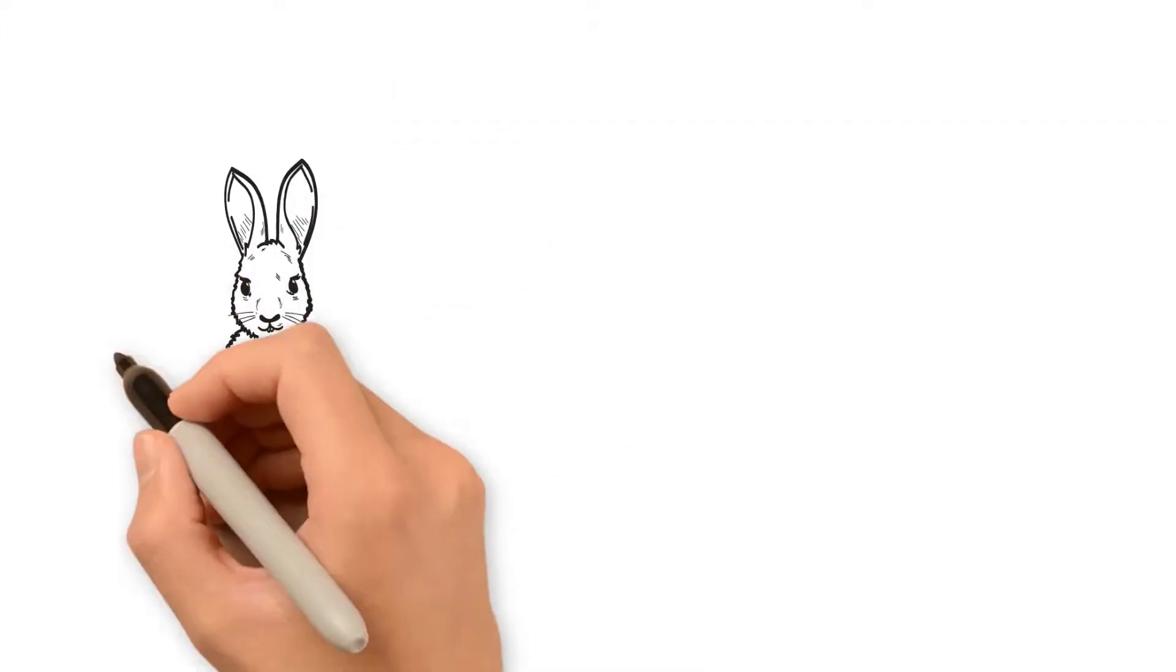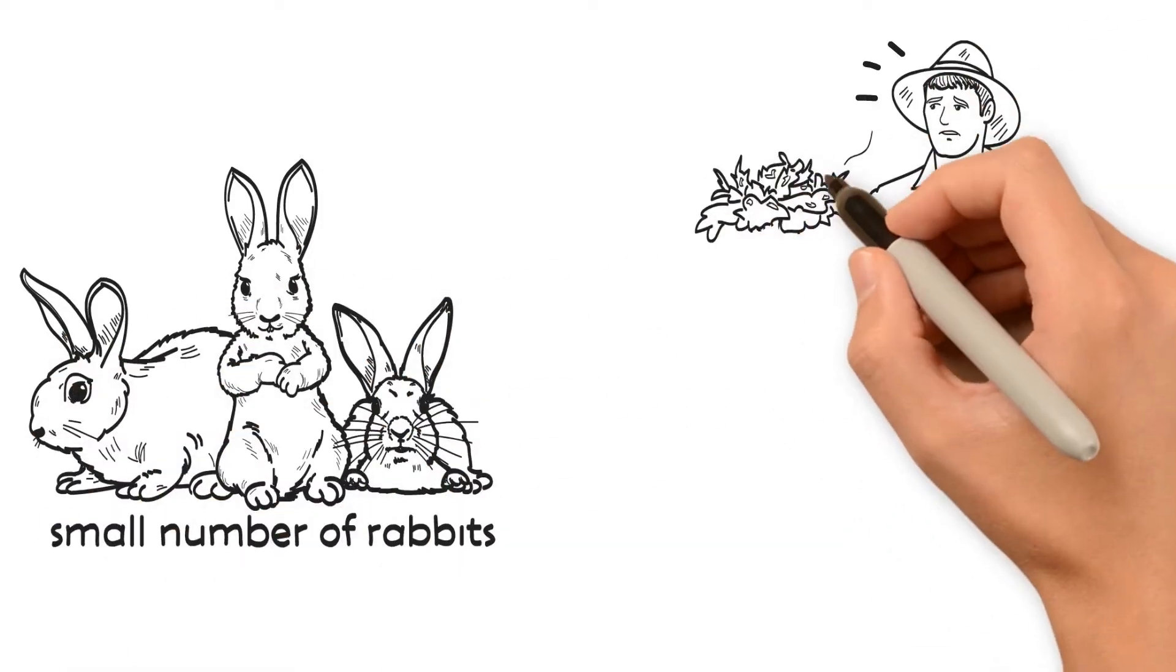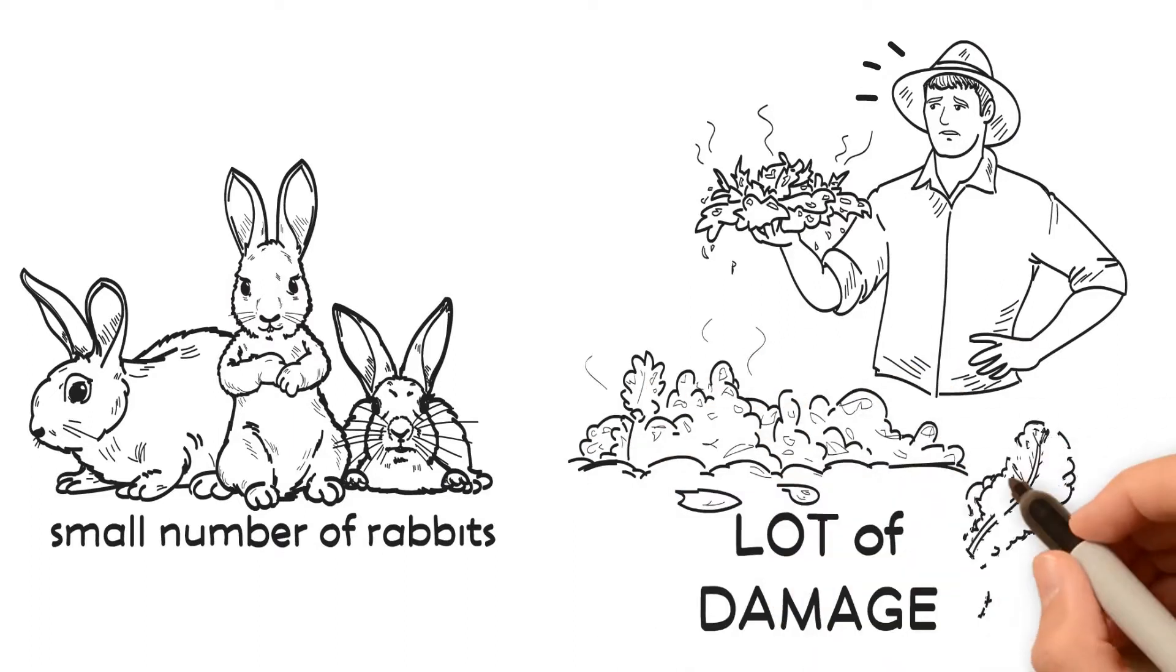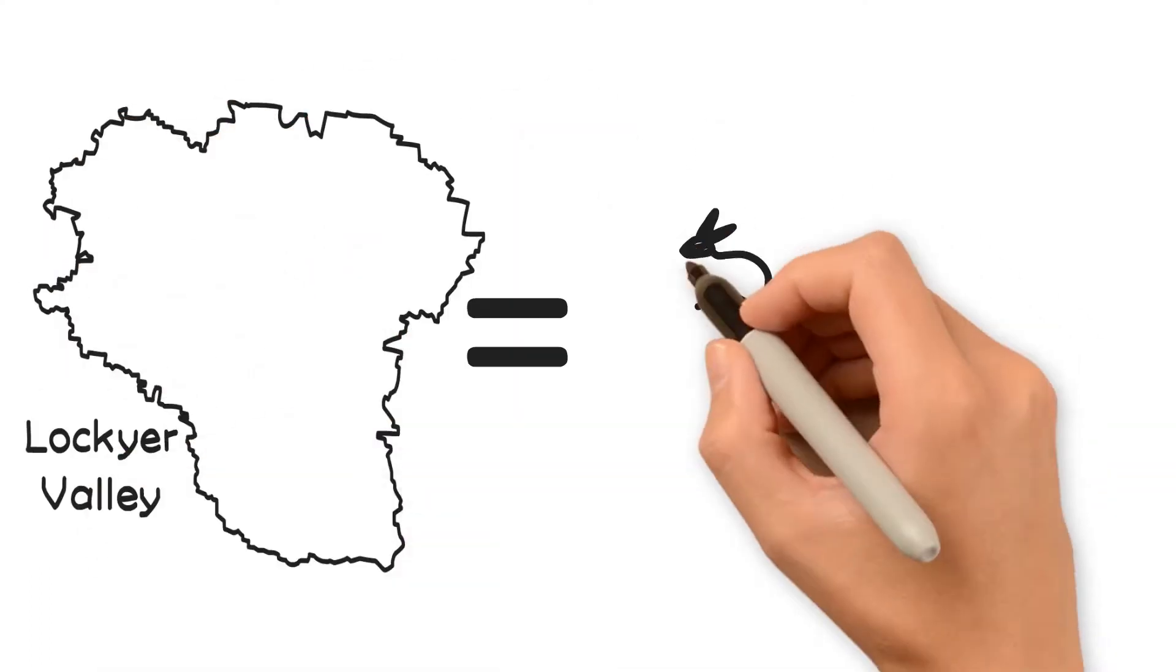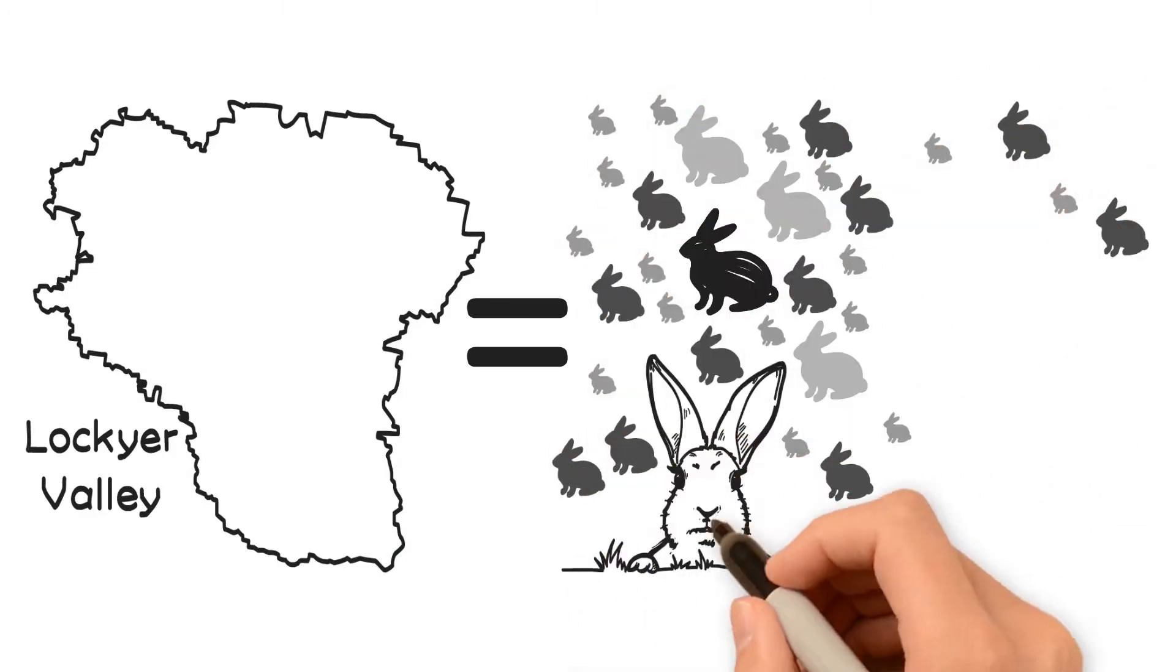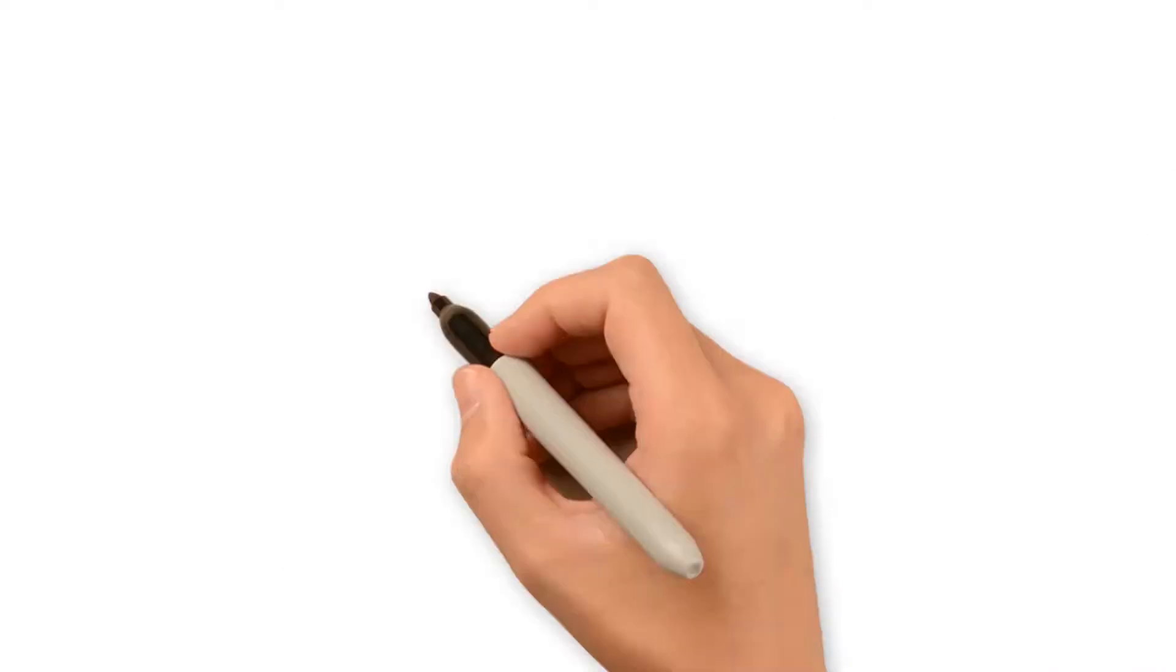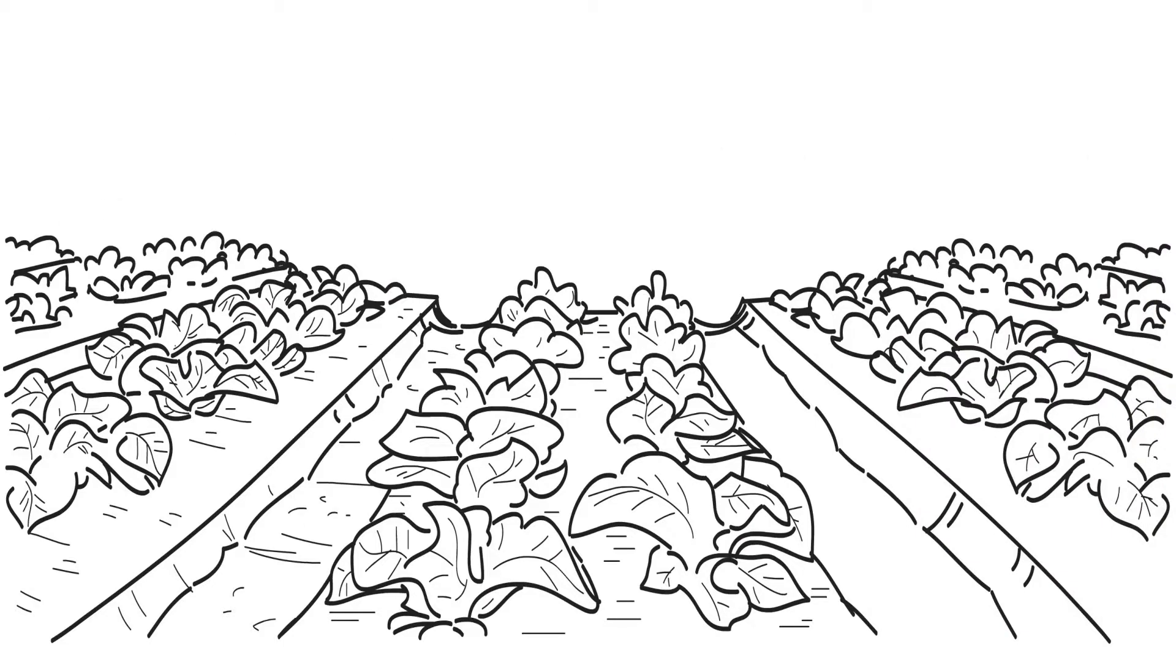As you can see, a relatively small number of rabbits can do a lot of damage to vegetable crops, grazing land, recreational areas and farming infrastructure. One infestation discovered in the Lockyer Valley was capable of producing 10,000 young rabbits in a year. So imagine how much damage they could have done if they hadn't been detected and controlled quickly.